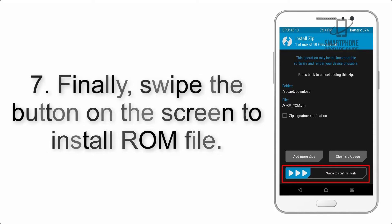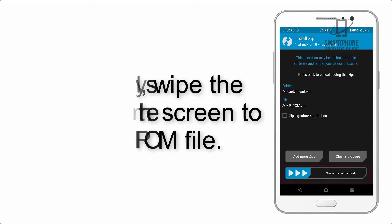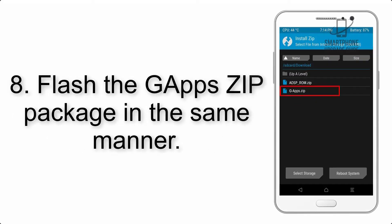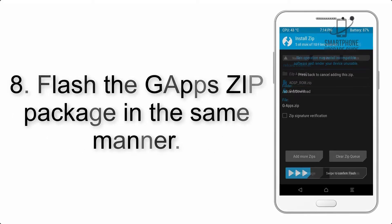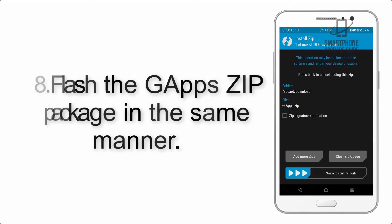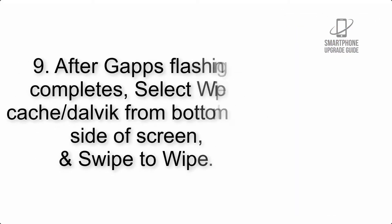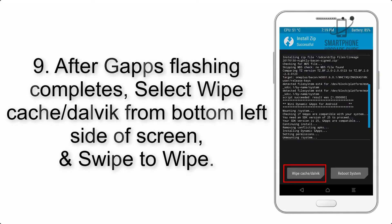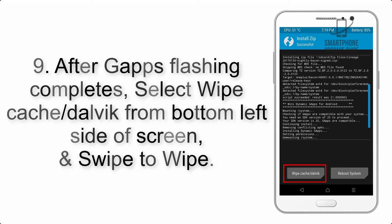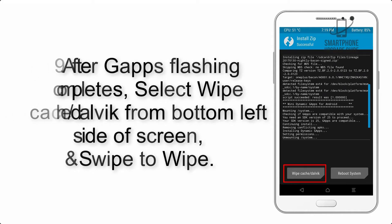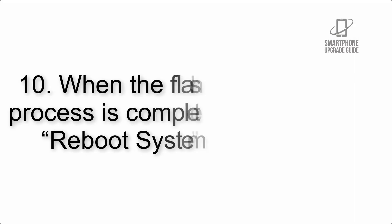Step 7: Swipe the button on the screen to install the ROM file. Step 8: Flash the Gapps zip package in the same manner. Step 9: After Gapps flashing completes, select Wipe Cache and Dalvik from the bottom left side of the screen and swipe to wipe.